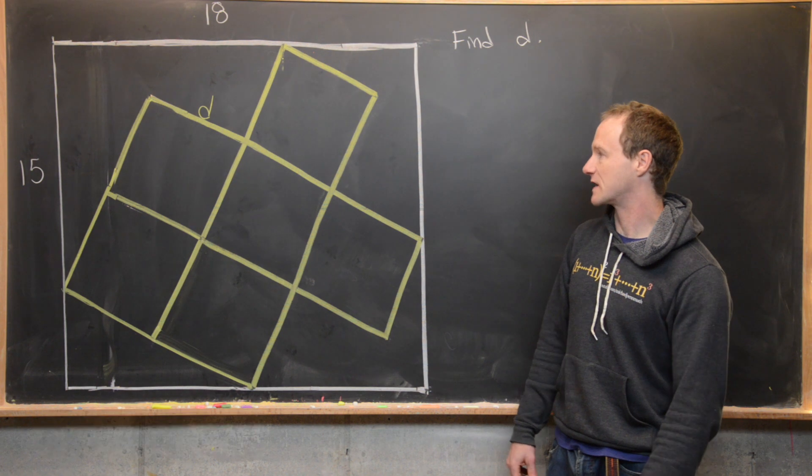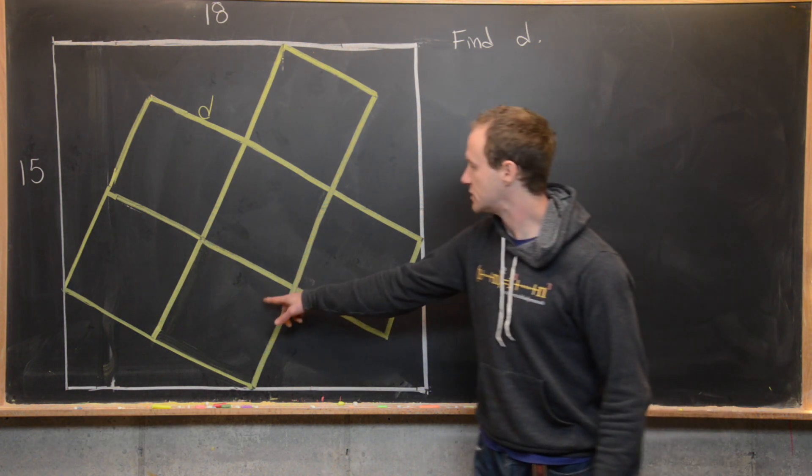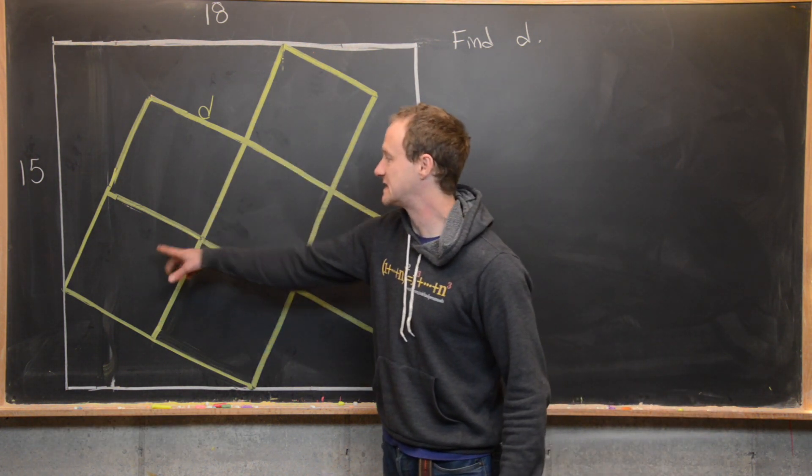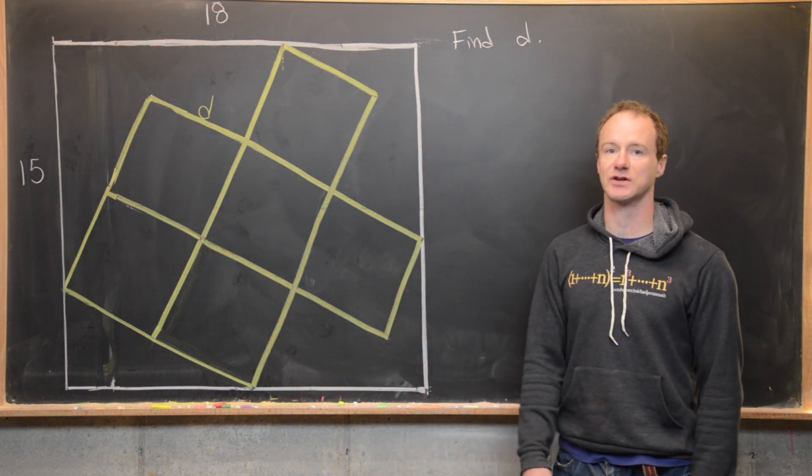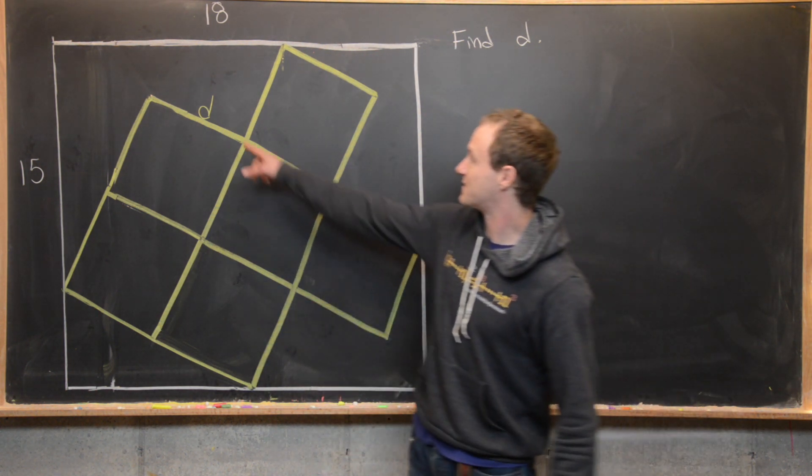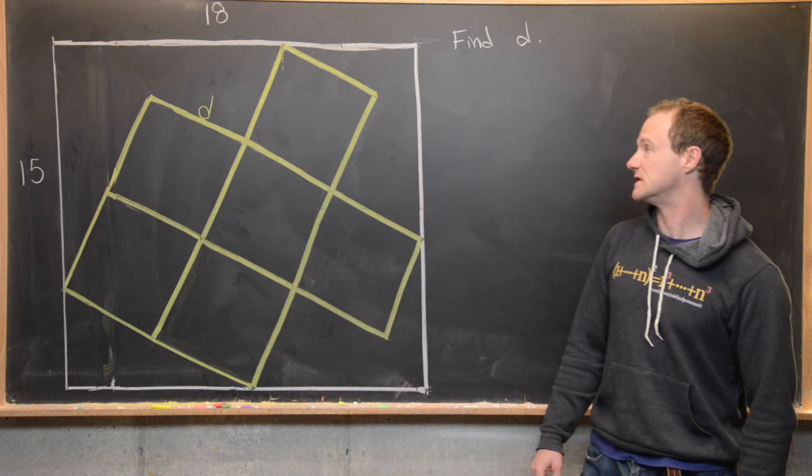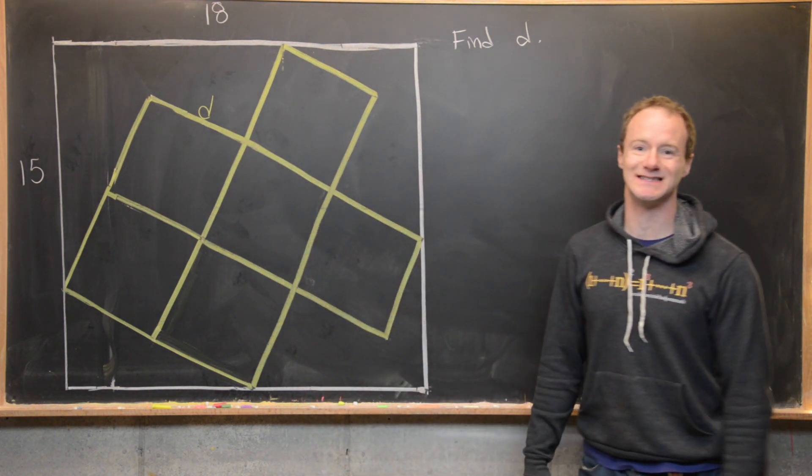And then inside that rectangle we have one, two, three, four, five, six squares that have been inscribed in this fashion. And our goal is to find the side length of one of these squares, which I've denoted by D.